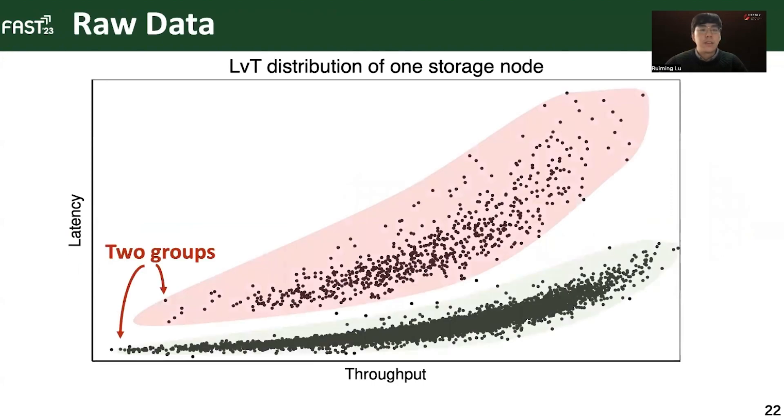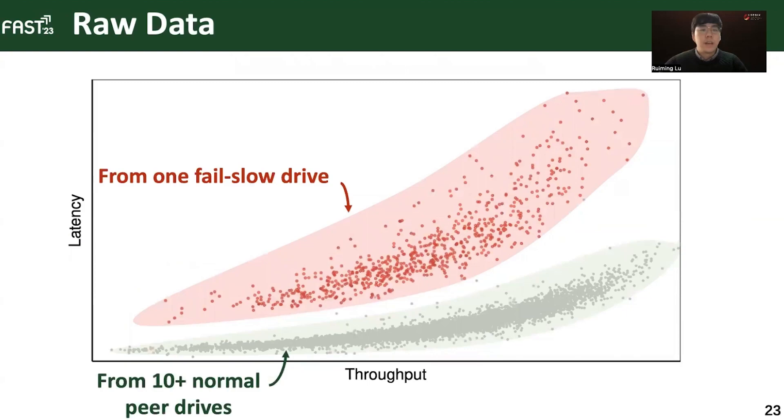By taking a glance at the figure, there are obviously two groups of LVT distributions, one above in red and another one below in green. In fact, the upper red group is from the fail-slow drive while the lower green group is from its normal peers from the same node.